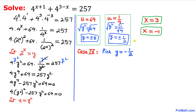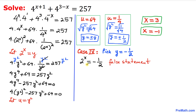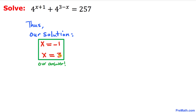Case 4: y = −1/2. We have 2^x = −1/2, but 2^x cannot equal a negative number, so this is a false statement and we reject it. Therefore our final solutions are x = −1 and x = 3.